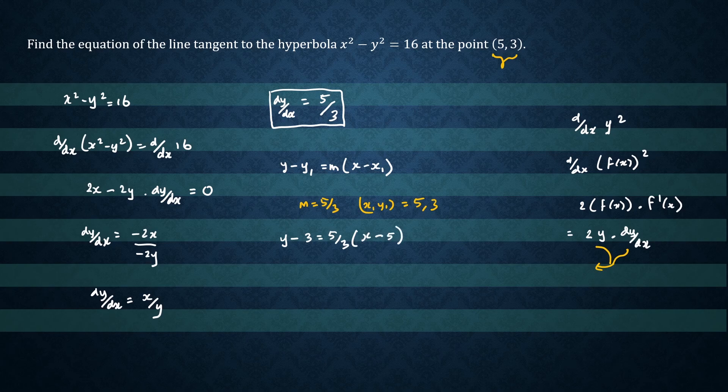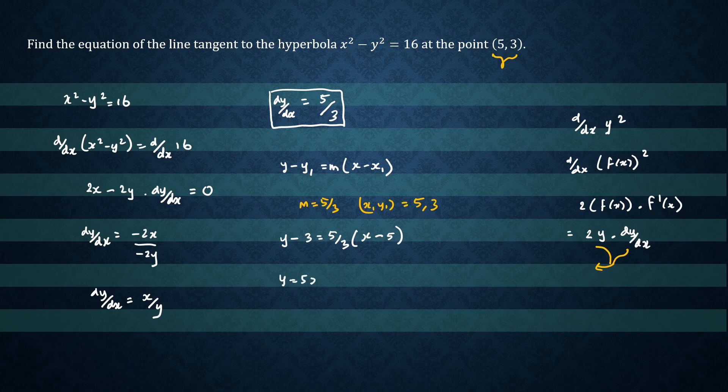When you rearrange the equation, you'll get y equals 5x minus 16 over 3.